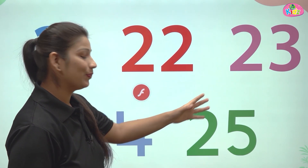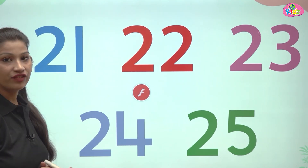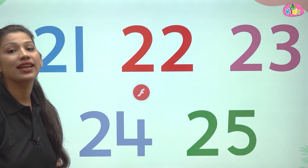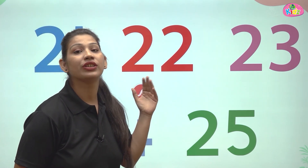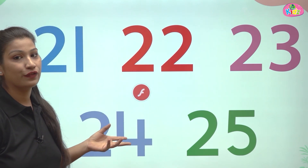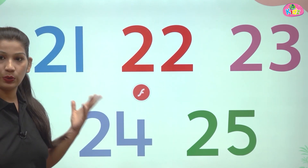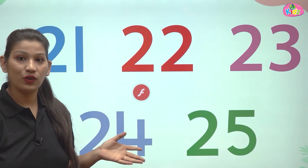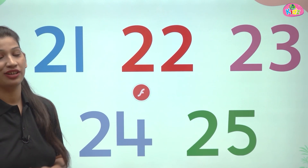We will cover five numbers today, from 21 to 25. After 20 comes 21, after 21 comes 22, after 22 comes 23, after 23 comes 24, and after 24 comes 25. Let's say them: 21, 22, 23, 24, 25. All of them are two-digit numbers.